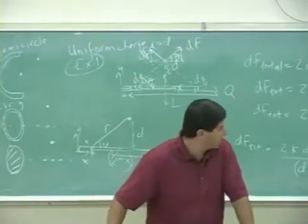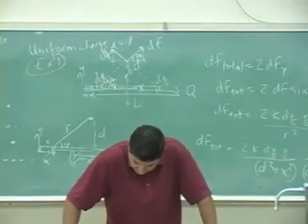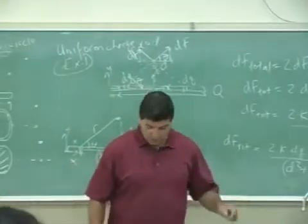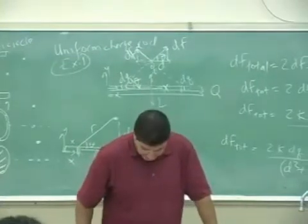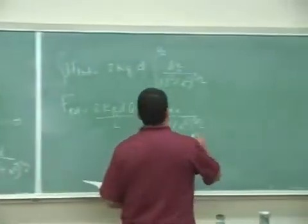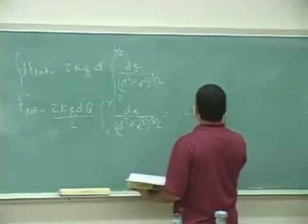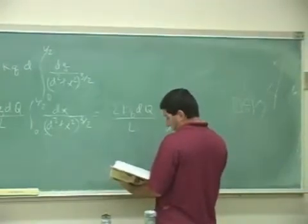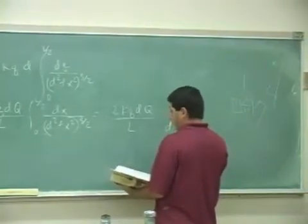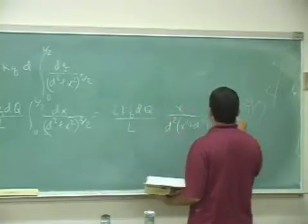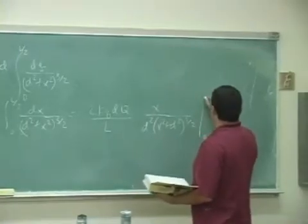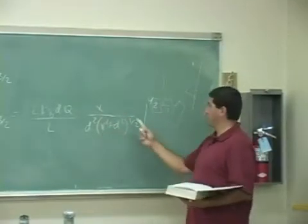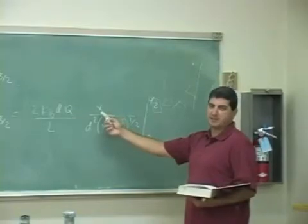I'm going to use the calculus integral table here. We're going to have it of the form, du over integral u squared plus a squared to the three halves. So that's going to be, the integral is going to be x over d squared, x squared plus d squared to the one half, from zero to L over 2. And then when you put L over 2 here into the x, you get a certain answer. And when you put 0, you get 0. I like it when that happens, when one of the limits gives you 0.